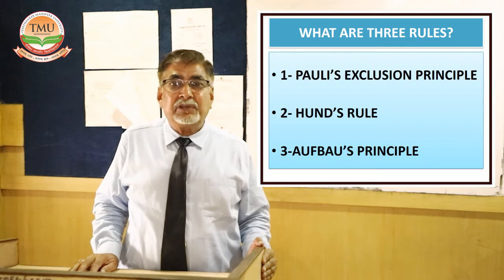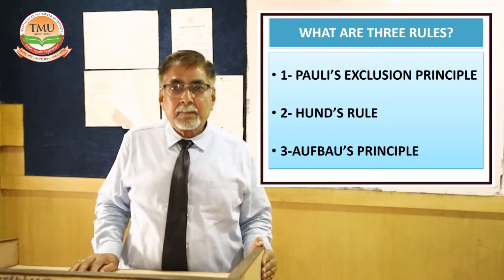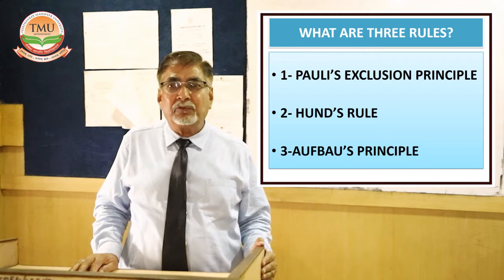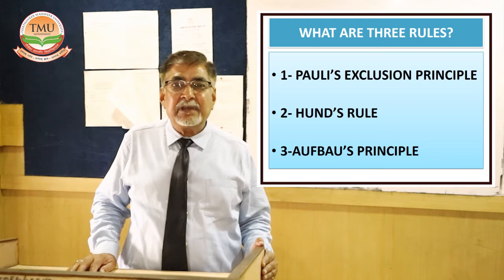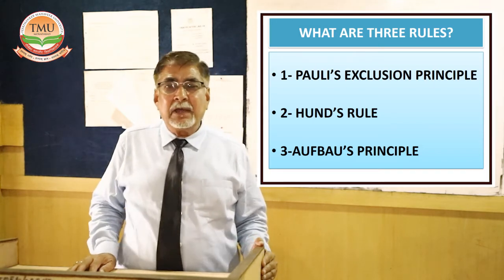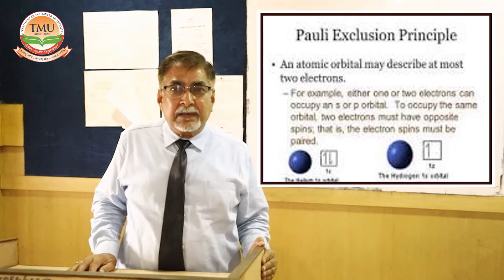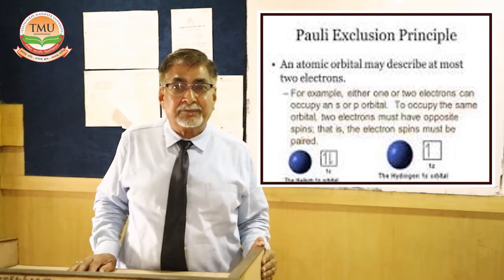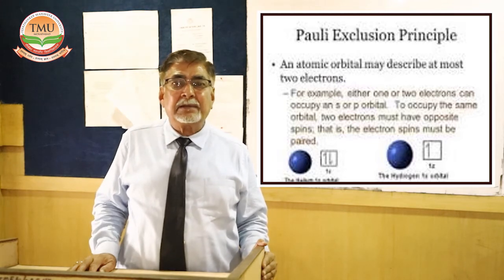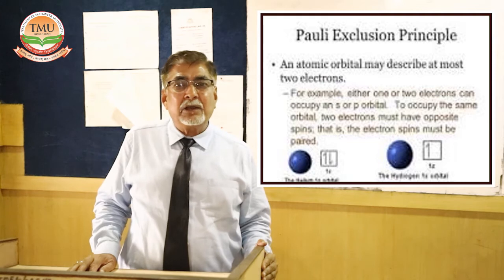The filling of the orbitals is governed by three rules which must be followed to write the electronic configuration of elements. Rule number one is Pauli's Exclusion Principle. According to this rule, an orbital can accommodate two electrons only if their spins are opposed — that is, the two electrons must have different quantum numbers. One electron goes in the clockwise direction and the other in the anticlockwise direction.